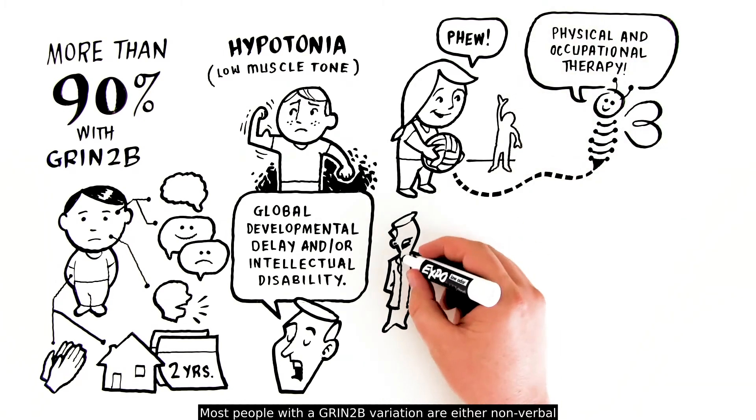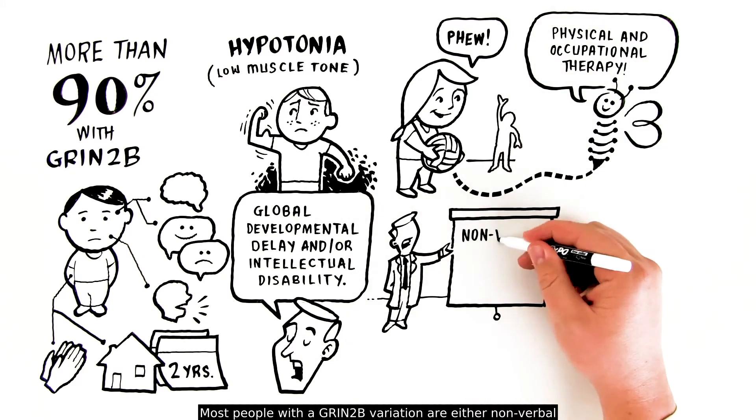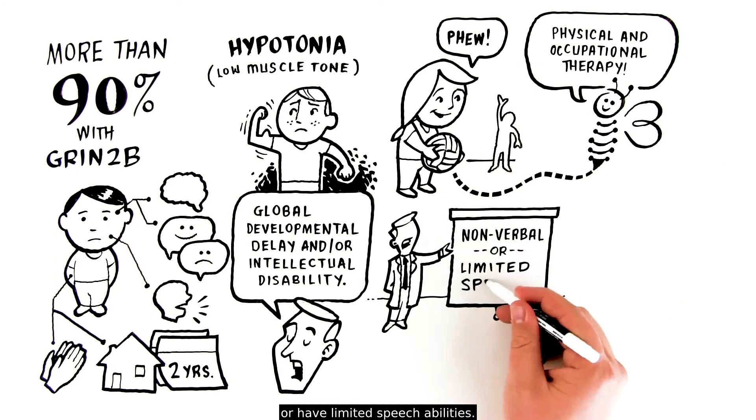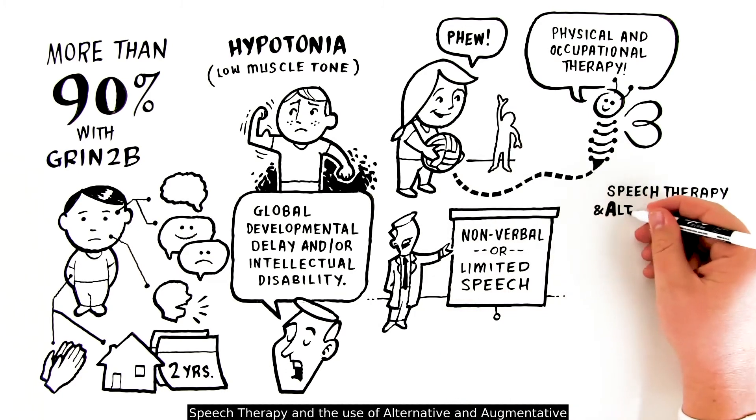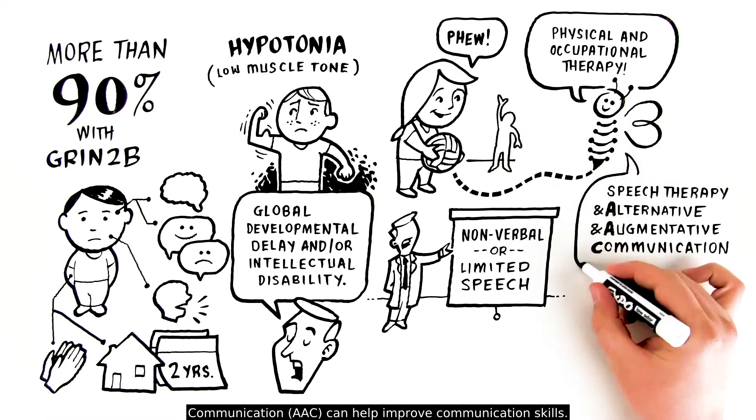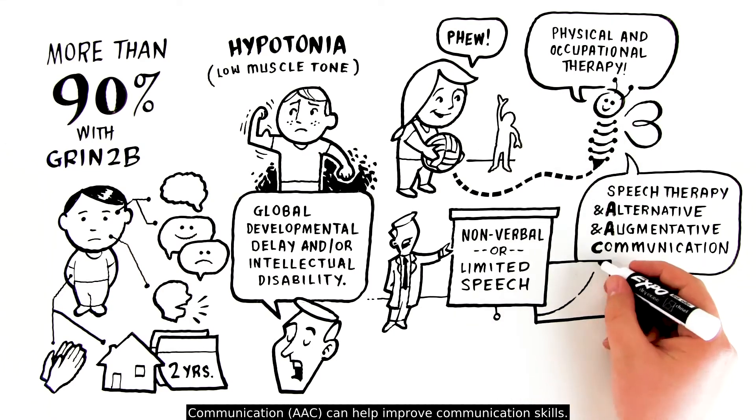Most people with a GRIN2B variation are either non-verbal or have limited speech abilities. Speech therapy and the use of Alternative and Augmentative Communication, AAC, can help improve communication skills.